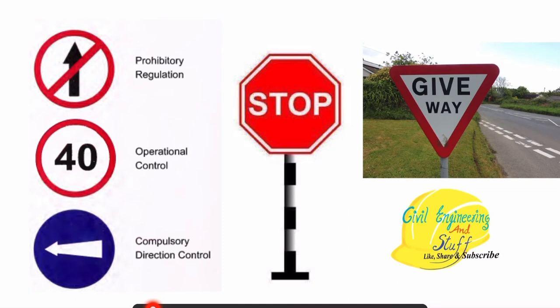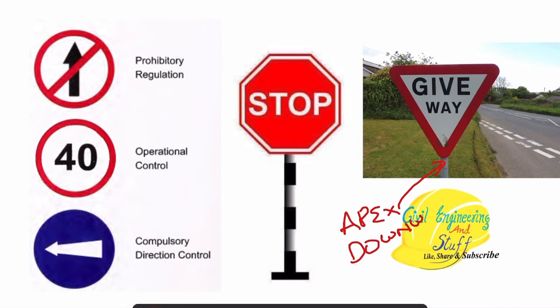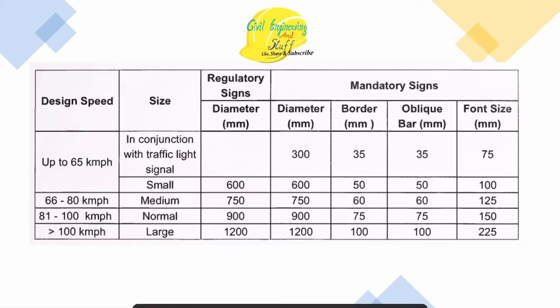You can correlate with the examples. The general shape is circular with red border, red diagonal bar, and anything written in black on a white background. For a positive message it is in blue background with white symbol, circular shape. The stop sign is octagonal in shape with red background written in white. The yield or give way sign is triangular in shape — very important — apex downward, with red border, white background, and text in black.